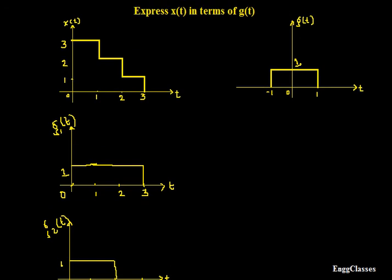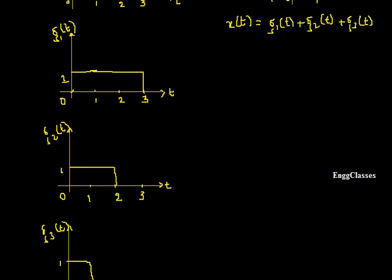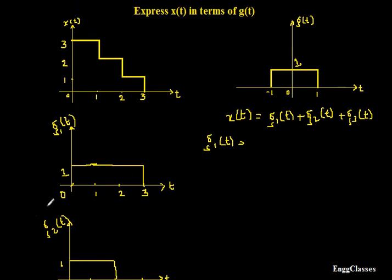Therefore, x(t) is equal to g1(t) plus g2(t) plus g3(t). But the task is I should know what g1(t), g2(t), and g3(t) are. So if I could write the expressions for them, I am done with the task. g1(t) is a time-shifted and time-scaled version of g(t). I would write g1(t) = g(at − b), where a is the scaling factor and b is the shifting factor.